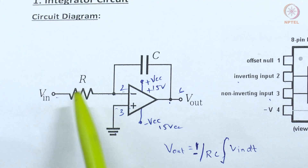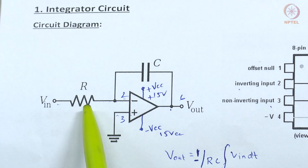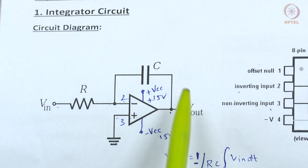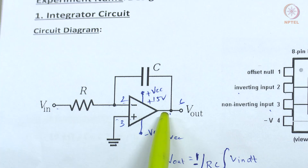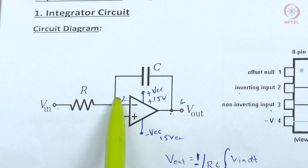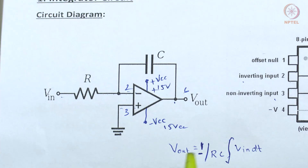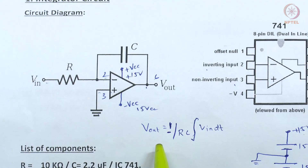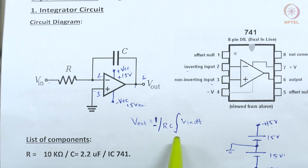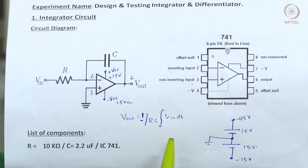To get an integrator, we have to connect one resistor at the input and one capacitor in the feedback. Feedback means the component is placed between the input pin and the output pin. The equation for this integrator is: V_out = −(1/RC) × ∫V_in dt.